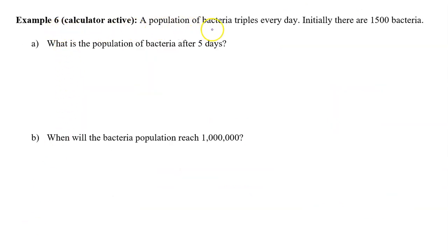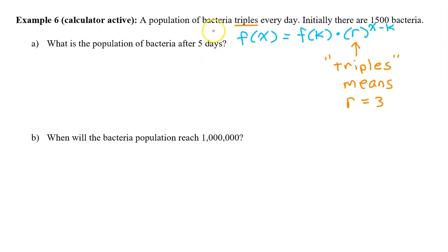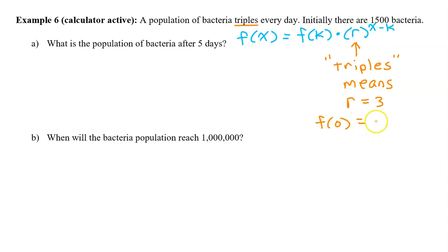Example 6. A population of bacteria triples every day. Initially, there are 1,500 bacteria. Part A: What is the population of bacteria after 5 days? When we are told that the output values double or triple or quadruple, that means we are talking about an exponential function. In this case, the word 'triples' means that r is 3. If it said doubles, r would be 2; quadruple, r would be 4, etc. The initial 1,500 bacteria means that f(0) is 1,500 — this will be our f(k).